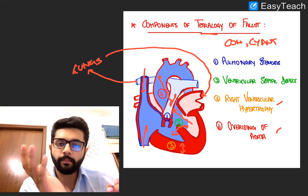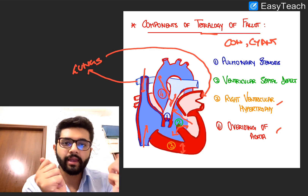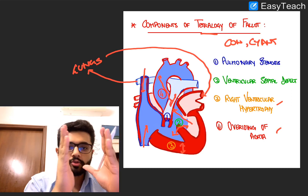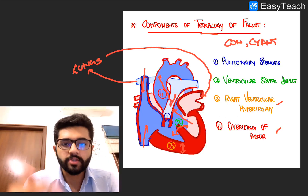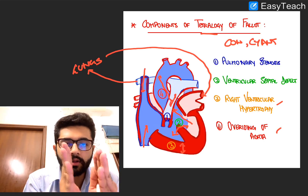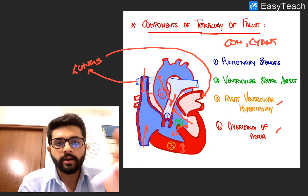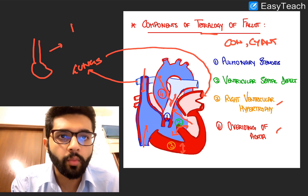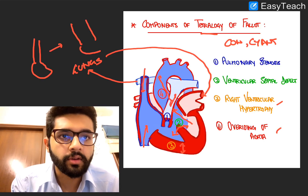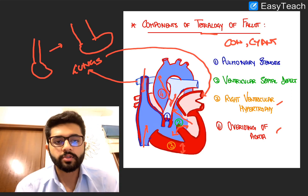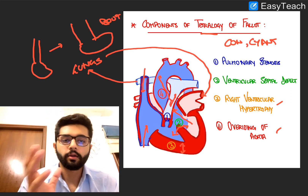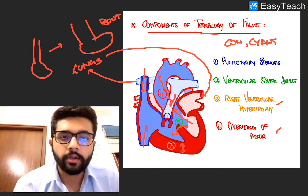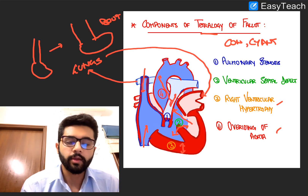Blood from both the right ventricle and left ventricle are pushed into the aorta, so the aorta begins to get overridden — there's too much blood, and it slowly begins to widen. That is called Overriding of Aorta. Over time you have a widened aorta and right ventricular hypertrophy, which causes what is called the boot-shaped heart — typical of Tetralogy of Fallot, even visible on X-ray.